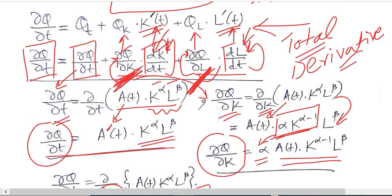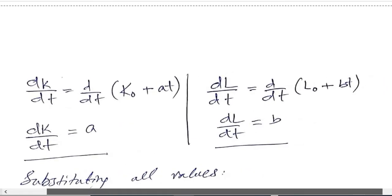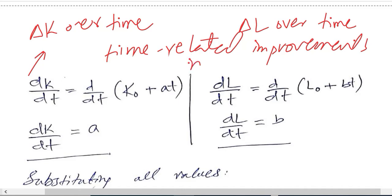So these values that I am overlining, not underlining, overlining, are the values I need to know. That is dk over dt and dl over dt. That is, let me put and bring it into the view. I should explain this change in capital over time. This is change in labor over time. In other words, time-related improvements in capital and labor.